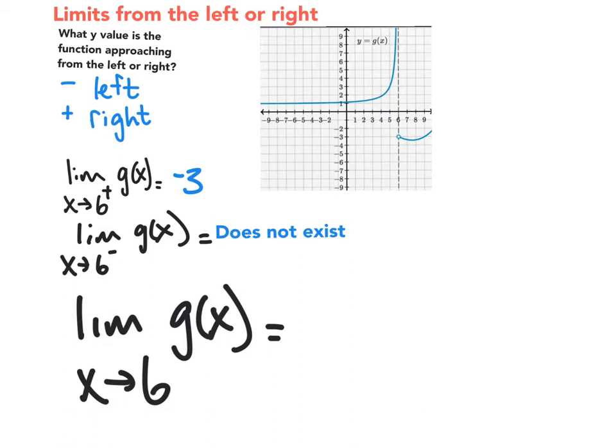Now, unless these two numbers are the same, and so we have negative 3 and does not exist, unless they're the same, the limit overall of 6 from the left and right does not exist. However, if they were the same number, then that number would be the limit.